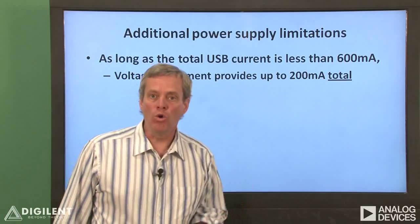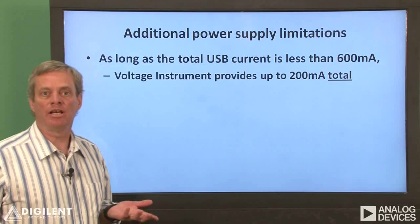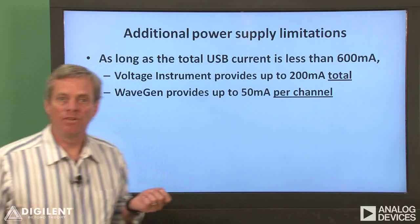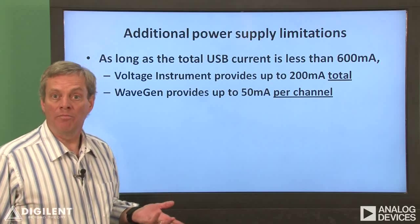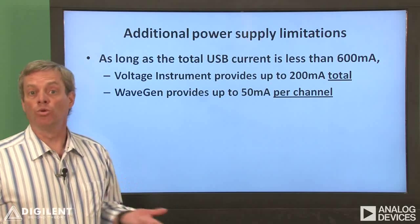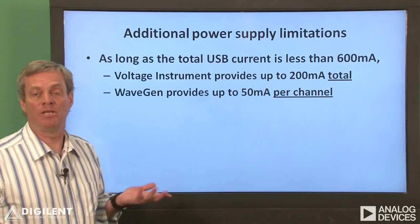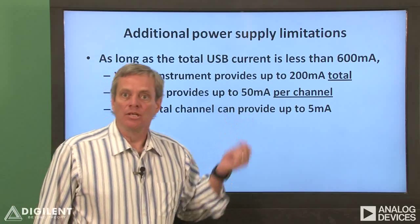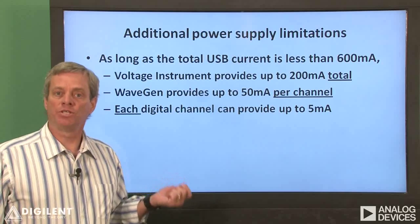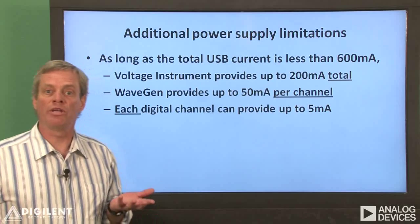The voltage instrument will provide at most 200 milliamps total to the V plus and V minus terminals. The wavegen instrument limits the output current to at most 50 milliamps for each channel, and the Analog Discovery displays no warning or error message when this limit is exceeded — the only indication is that increasing the wavegen voltage levels does not result in increased voltage or current being provided to the circuit. The digital channels can provide at most 5 milliamps per channel. These current limitations can also be affected by the particular USB port being used, and a powered USB hub can always be used if you encounter trouble.